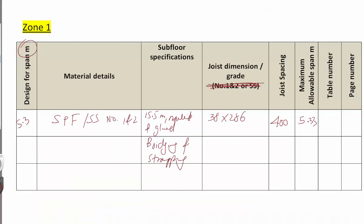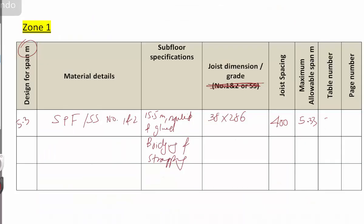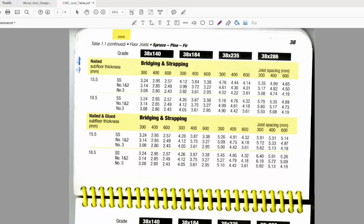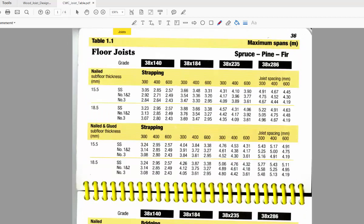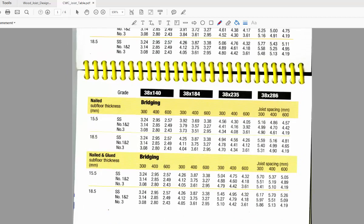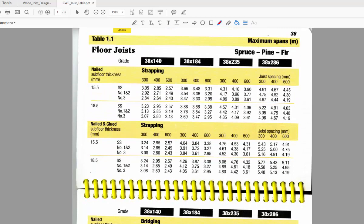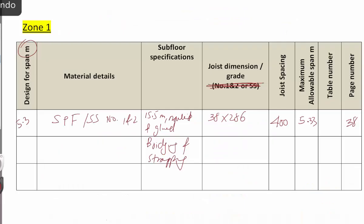We need to mention the table number. The table number is 1.1 and the page number is 38. That completes zone one. Now if we want to do zone two, we go back to zone number two.